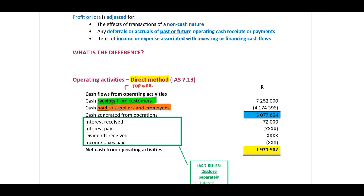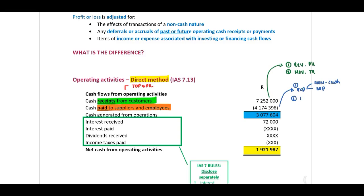The direct method starts at the top of your profit and loss statement. For cash receipts from customers: step one, include your revenue; step two, calculate your movement in trade receivables. For cash paid to suppliers and employees, start with expenses, remove non-cash items and items separately disclosed, then account for movement in inventory and trade payables.